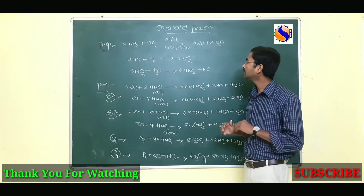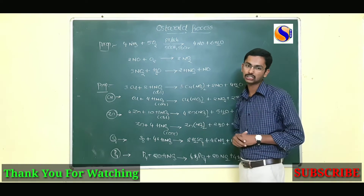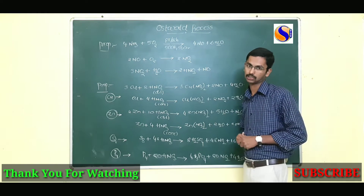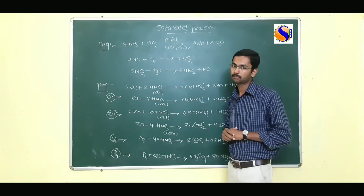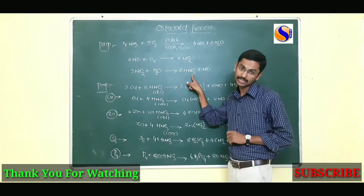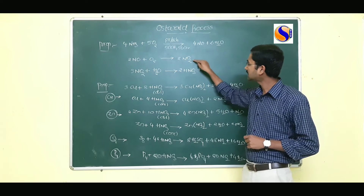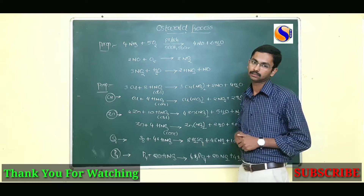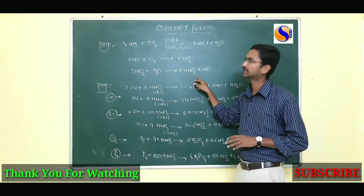The formed nitric oxide undergoes further oxidation to give nitrogen dioxide. The nitrogen dioxide formed in the above step on hydrolysis forms nitric acid. So in three steps we can prepare nitric acid.